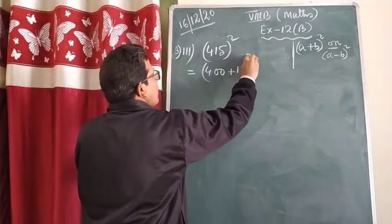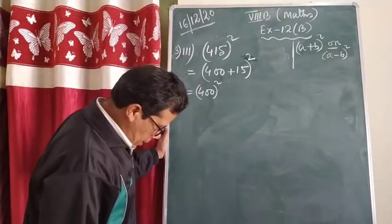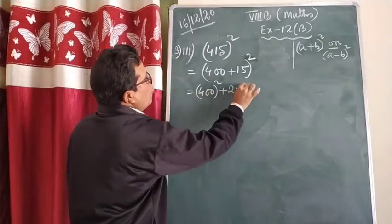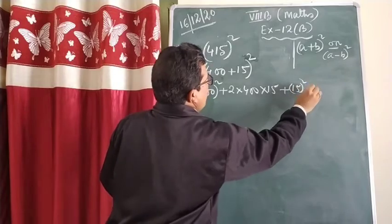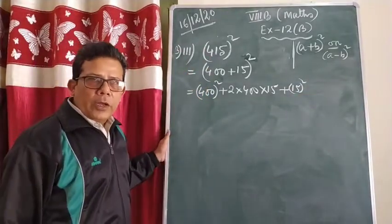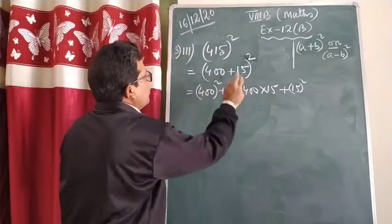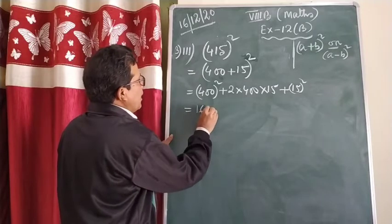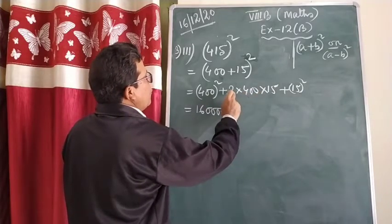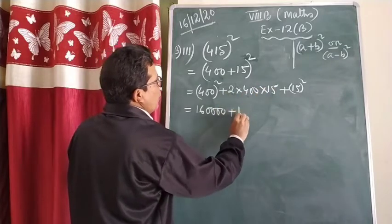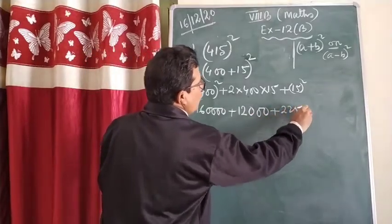You know how to do it — write the (a+b)² formula: first one squared, plus 2 into first one into second one, plus second one squared. So a is 400 and b is 15. First: 400² = 160,000. Then 2 × 400 × 15 = 30 × 400 = 12,000 — two zeros will come. And 15 × 15 = 225.